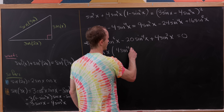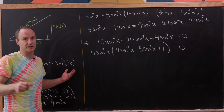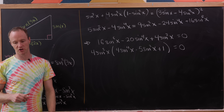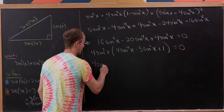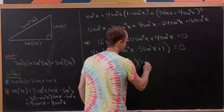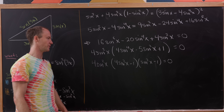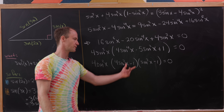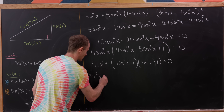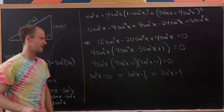That leftover expression is a quadratic polynomial where sine squared is the variable, and we can factor it: 4 sine squared x times (4 sine squared x minus 1) times (sine squared x minus 1) equals 0. Since the product of three factors is zero, one of them must be zero. So either sine squared x equals 0, or sine squared x equals one quarter, or sine squared x equals 1. This means sine x equals 0, or sine x equals plus or minus one half, or sine x equals plus or minus 1.